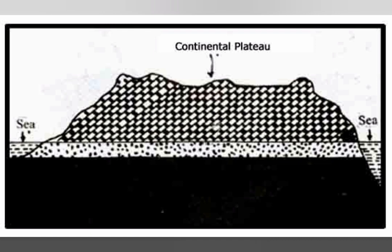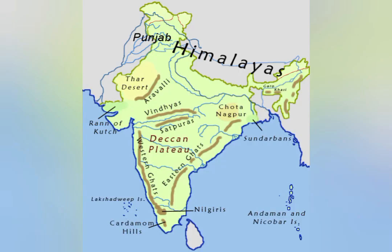The last type of plateaus are the continental plateaus, which rise abruptly from the lowlands or from the sea. Examples of continental plateaus are the Chota Nagpur Plateau and the Deccan Plateau of India.